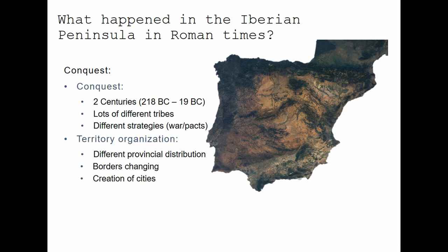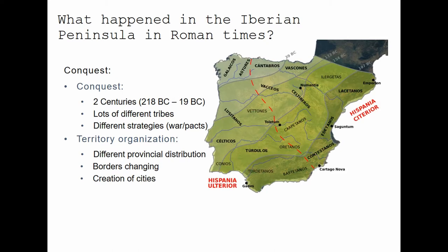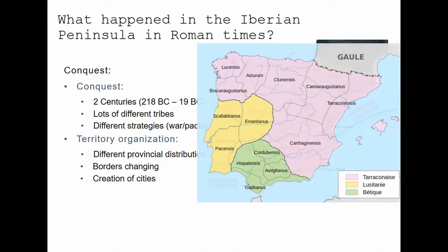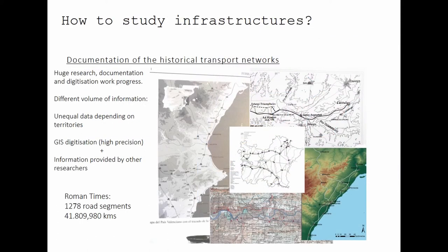The Iberian Peninsula has a very long Roman occupation. The conquest of this territory took several centuries and there were different phases — moments when the Romans used wars, and with other tribes they used pacts. It's a territory that evolved over time with different Roman provinces and several subdivisions. To do this project, we digitized more than 1000 road segments, totaling more than 41,000 kilometers of roads.